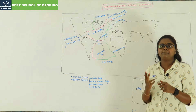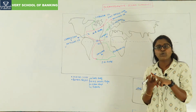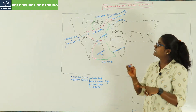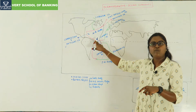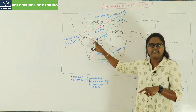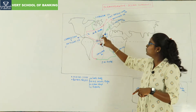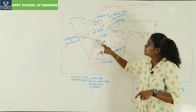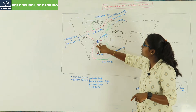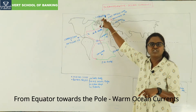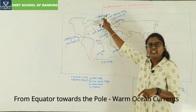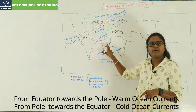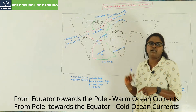In ocean currents there are two types: cold ocean currents and warm ocean currents. Everything marked in red pen is a warm ocean current; everything marked in blue or green is a cold ocean current. Currents moving from the equator towards the poles are warm ocean currents, while currents moving from the poles towards the equator are cold ocean currents.